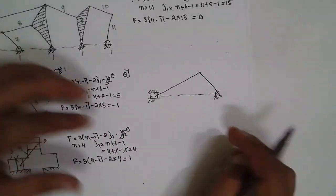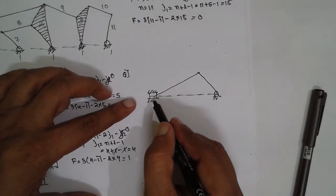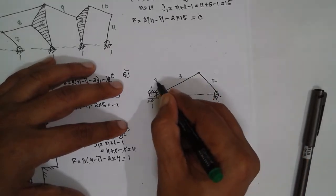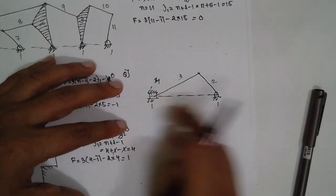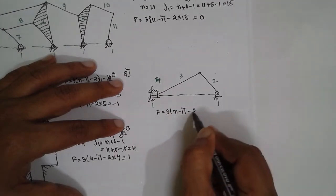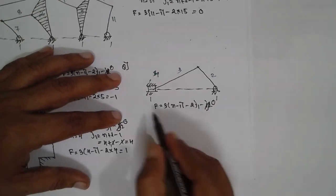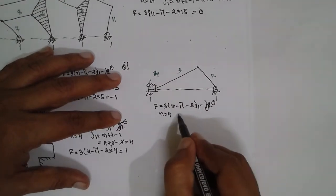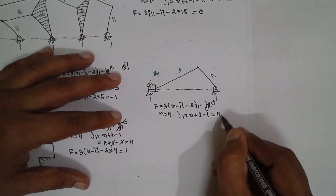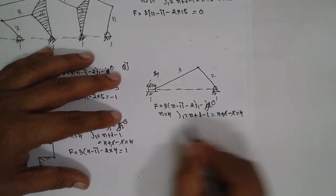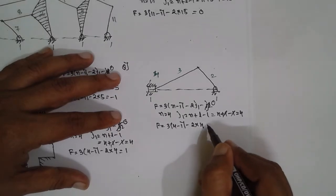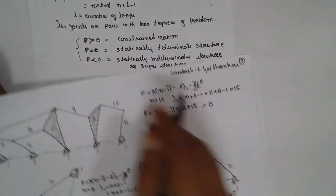Next problem: another piston mechanism with surface contact. Fixed links 1, moving links 2, 3, piston as link 4 — n = 4. j2 = 0. There is a single loop. j1 = 4 + 1 − 1 = 4. Substituting: f = 3(4 − 1) − 2(4) = 1. Since f = 1, we write constrained motion.